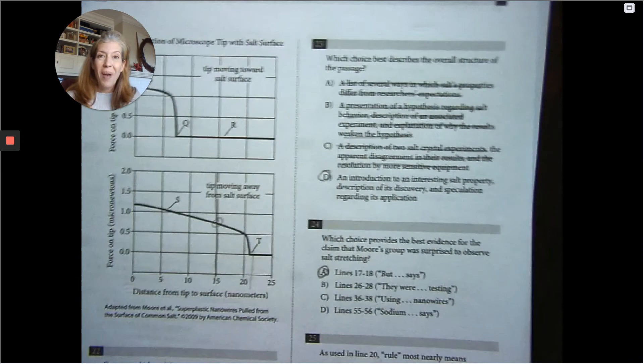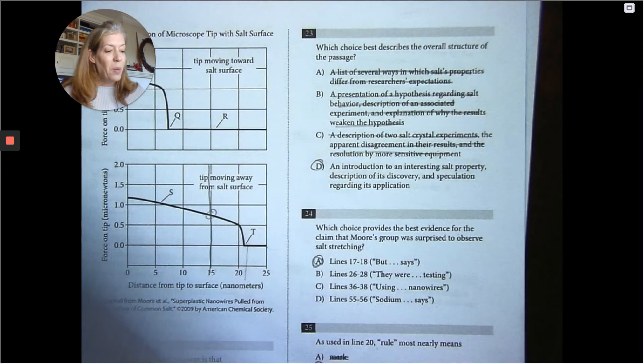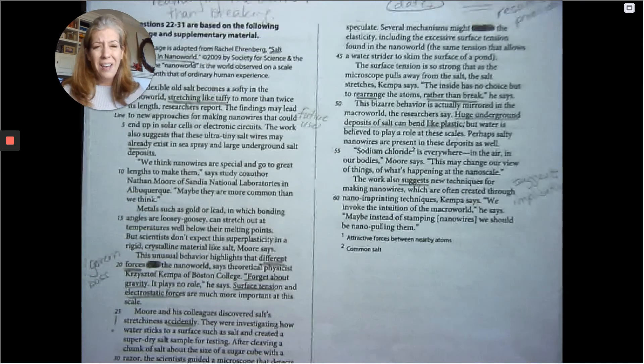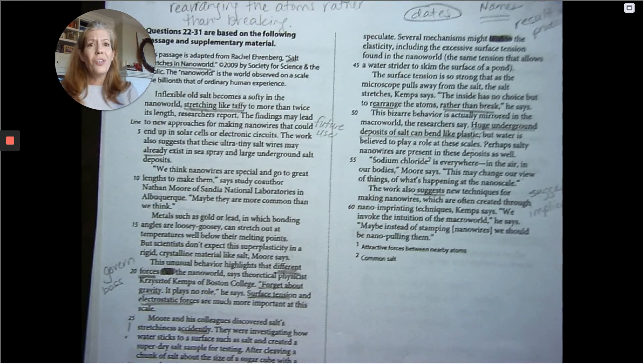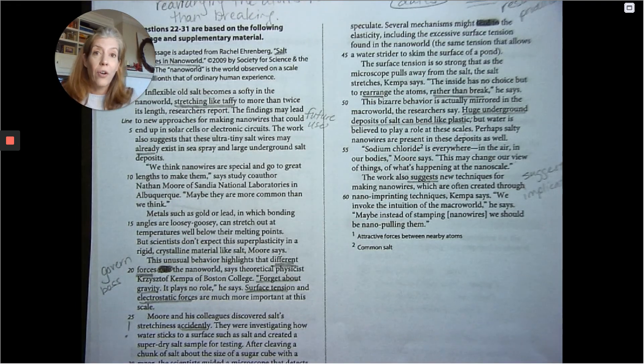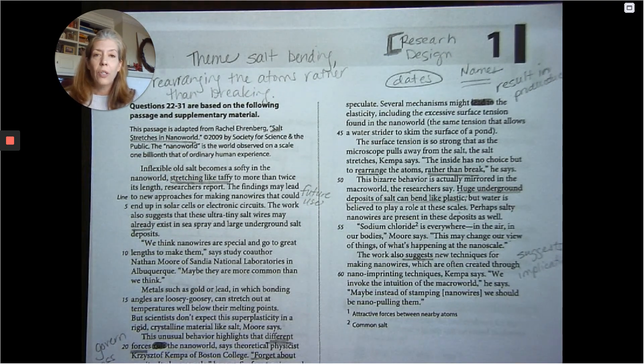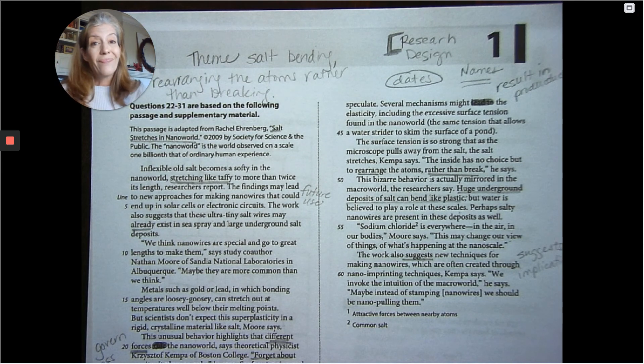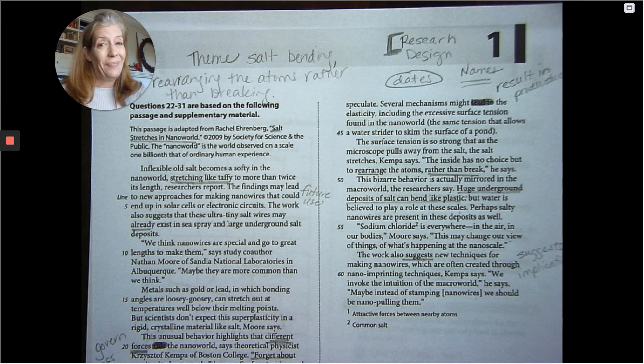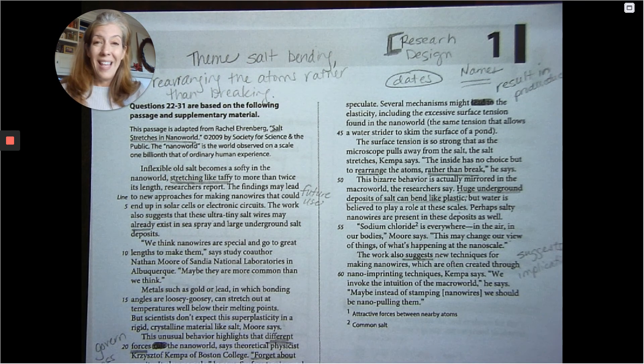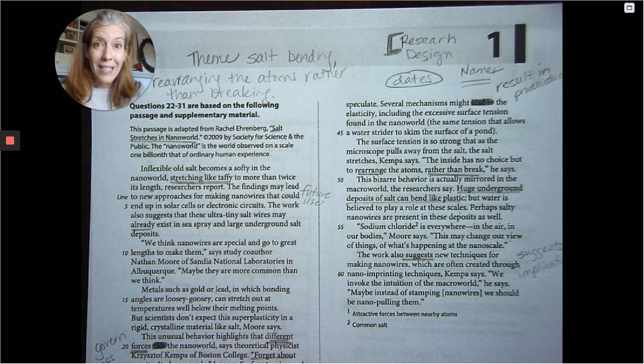And there you have it, science with table. We predicted a lot of those questions. Most of the questions, when we went back into the reading, we had already underlined. We had our theme. We found our theme. We found the research design. We looked at names. Couldn't be any easier. Let's see what the SAT has for us next.